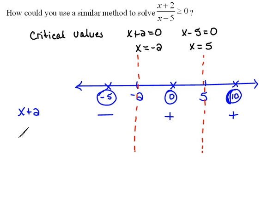Now let's see what happens with the other factor, the x minus 5. If I were to plug in negative 5, negative 5 minus 5 would be a negative number. If I put in 0, 0 minus 5 would be a negative number. And if I put a 10 in there, 10 minus 5 would be a positive number.